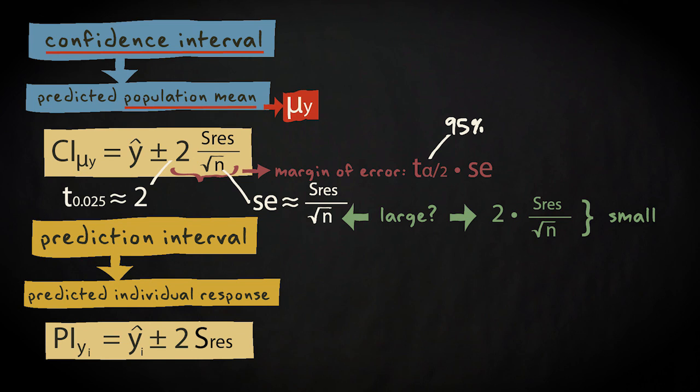If you don't recognize the residual standard deviation, it's the square root of the residual sum of squares divided by n minus 2. It represents the variability around the regression line.